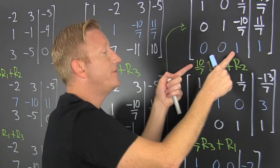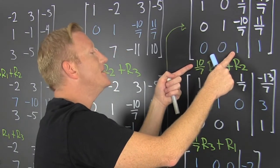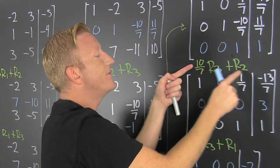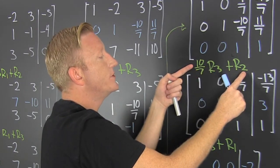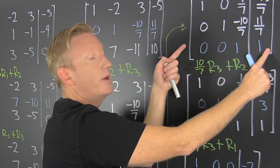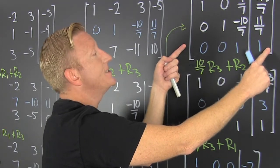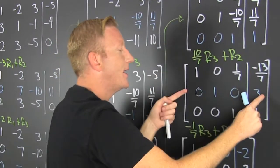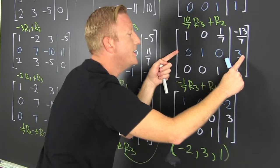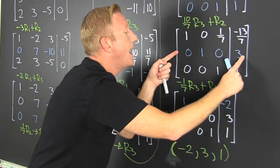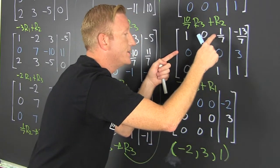So I multiply by the additive inverse. Additive inverse is 10 sevenths. So 10 sevenths row 3 plus row 2. So I multiply this entire row by 10 sevenths and I add it to that row. And that's how I got that. So then, now that I'm there. I need to kill that 1 seventh.